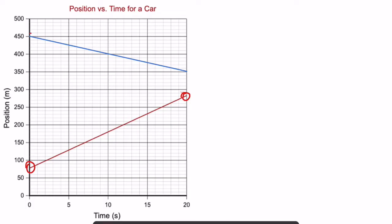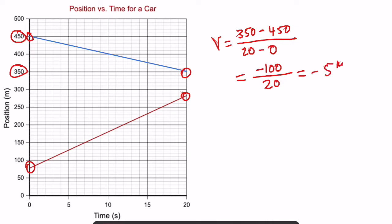Sometimes you'll have a line that runs the other way. It's going backwards from 450 meters to 350 meters. So when you find the slope, you would do the final Y position, the starting Y position, the ending time, the starting time, and you'd get this time negative 100 over 20, which would be negative 5 meters per second. That is the velocity of the object that made this blue line.